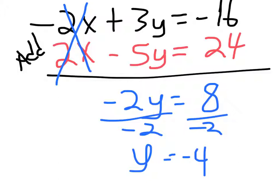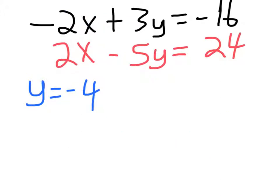So elimination tends to be a preferred method if it's set up that way. Once you solve for one variable in the system, you have to find the other. So take that negative 4, plug it into either equation. Let's use the bottom one here.